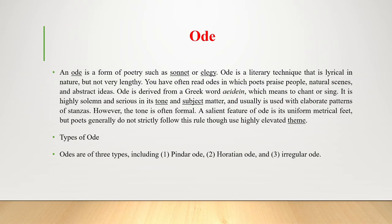The irregular ode was introduced in 1656 by Abraham Cowley, who imitated the Pindaric style and matter but disregarded the recurrent stanzaic pattern. Instead, he allowed each stanza to establish its own pattern of varying line lengths, number of lines, and rhyme scheme. This type of irregular stanza structure is free to order in accordance with shifts in subject and mood.